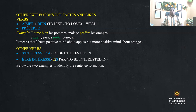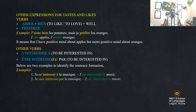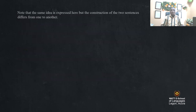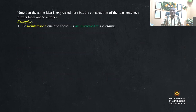Below are two examples to identify the sentence formation. 'Je m'intéresse à la musique' — I am interested in music. 'Je suis intéressé par la musique' — I am interested in music. Note that the same idea is expressed, but the construction of the two sentences differs. 'Je m'intéresse à quelque chose' — I am interested in something. 'Je suis intéressé par quelque chose' — I am interested in something.